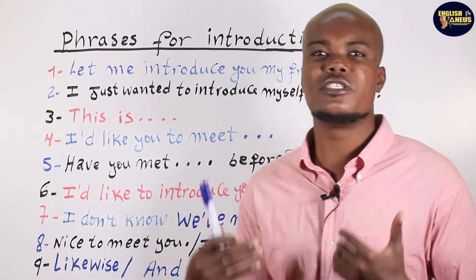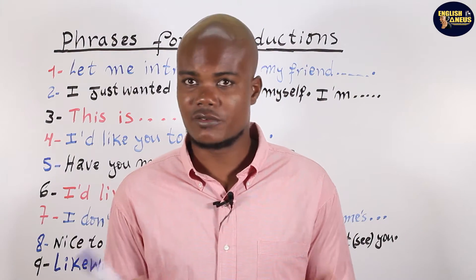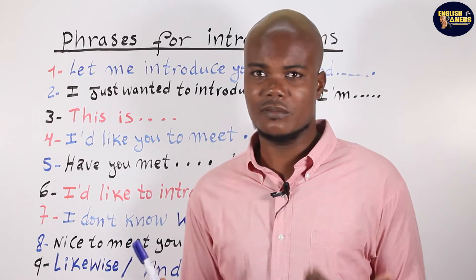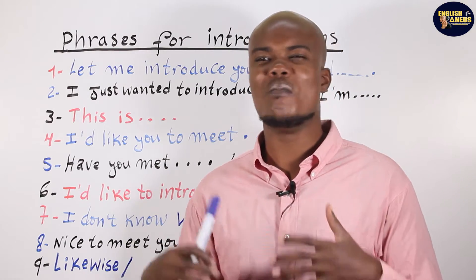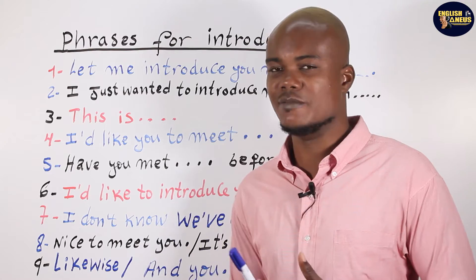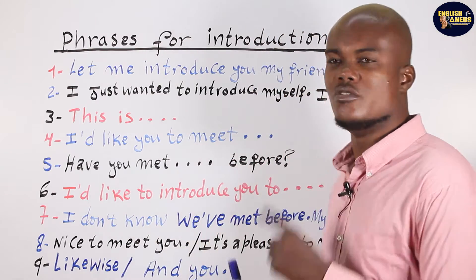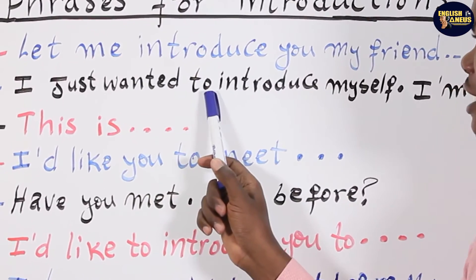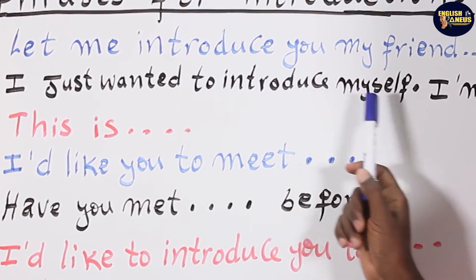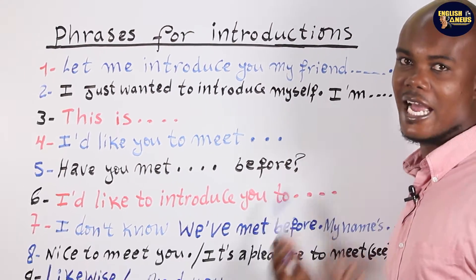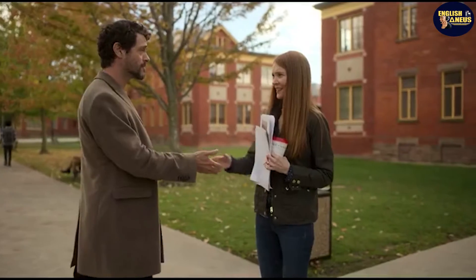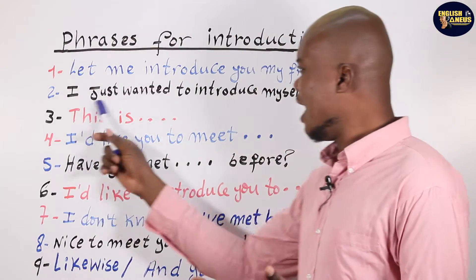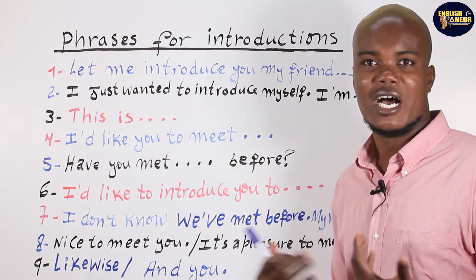And now, if you'd like to introduce yourself to someone directly, you can use one of these phrases. You can say: 'I just wanted to introduce myself. I am Daniel.' You approach the person, you walk up to them, and you say: 'Hello. I just wanted to introduce myself. I am Daniel.'